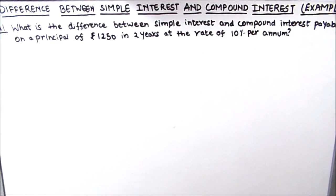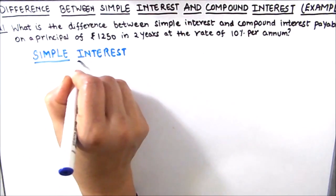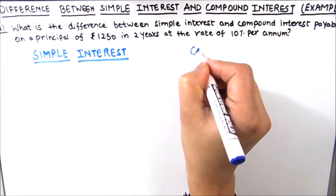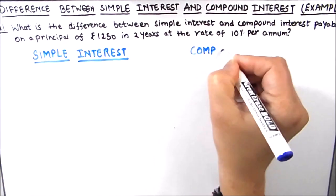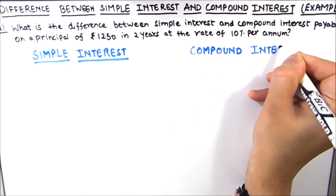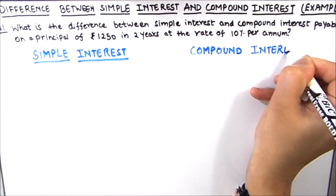So the first question is: what is the difference between simple interest and compound interest payable on a principal of rupees 1250 in two years at the rate of 10% per annum? We are going to find simple interest on the left hand side and compound interest on the right hand side, and then we will find the difference between the two.